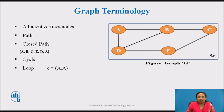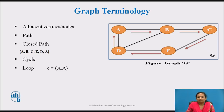Next is closed path. A path is known as a closed path if the edge has the same end points, i.e., if the starting vertex is equal to the last vertex. In graph G, path A, B, A, B, C, E, D, A is a closed path.